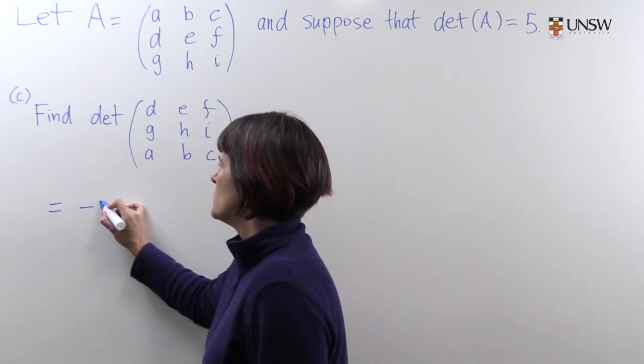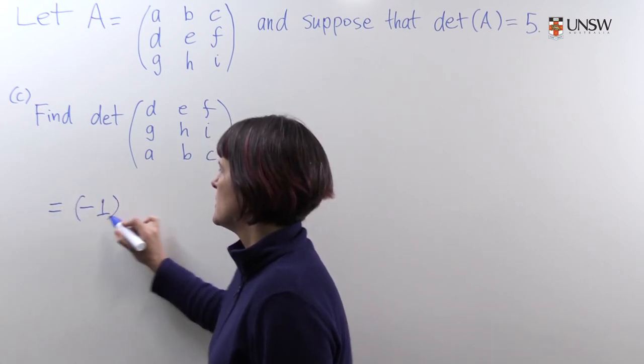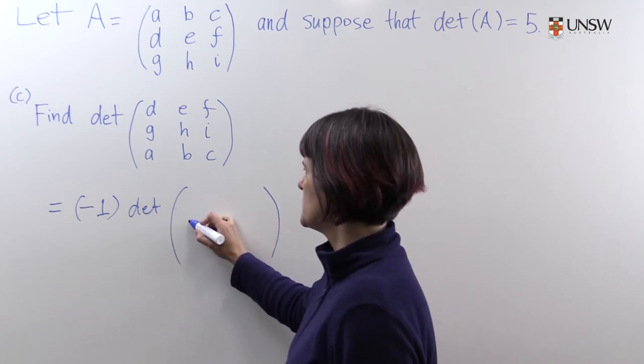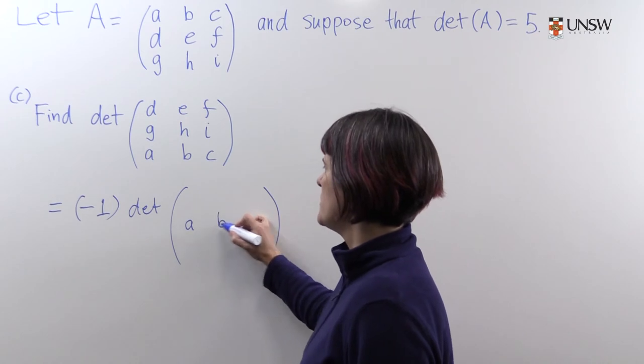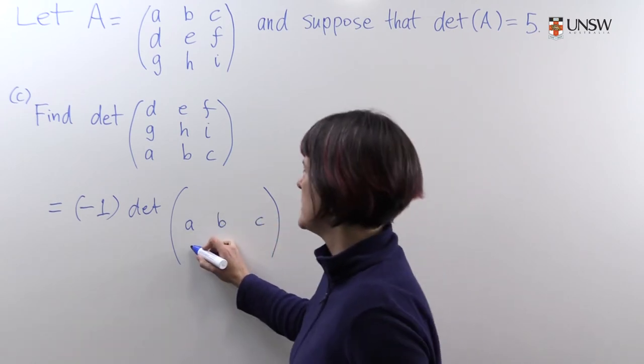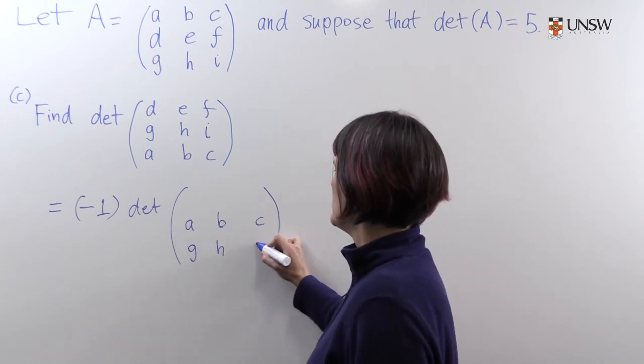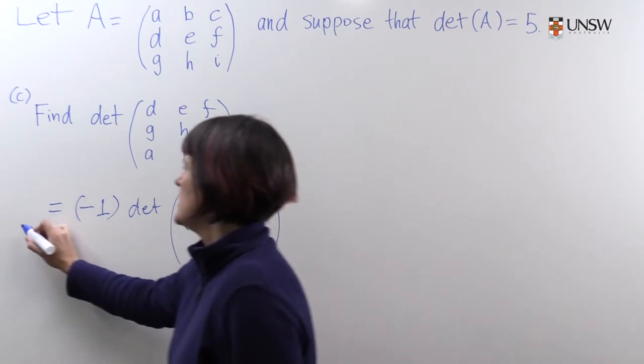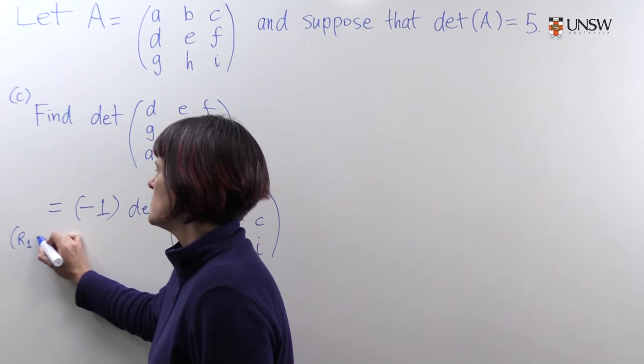So perhaps let's swap the second and third rows here. So this is minus one times the determinant of the result. We've swapped the second and third row. That's going to put G, H and I into the right position. And we've still got DEF up the top. The operation that we did, the elementary row operation.